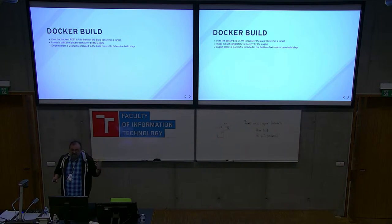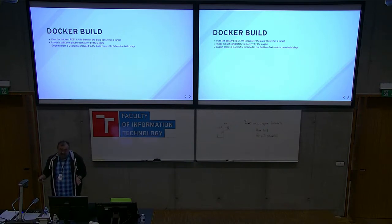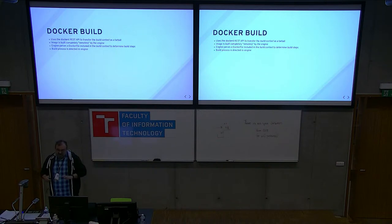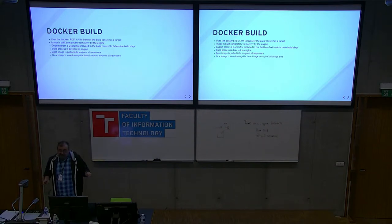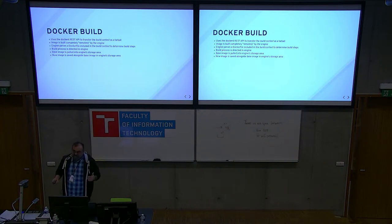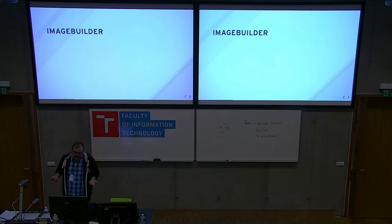The engine parses a Dockerfile, which is included somewhere in the build context — you can tell it exactly where. It figures out what to do and runs those things all inside the engine. The base image is pulled into the storage area that the daemon is using, and the image that you built is also saved alongside that base image. One of the benefits of that is, once you've done that, you can run the new image immediately because you never had to push it or pull it down from anywhere.